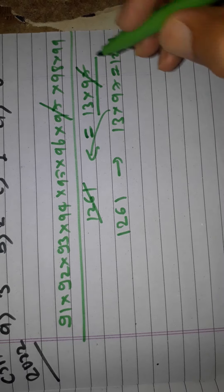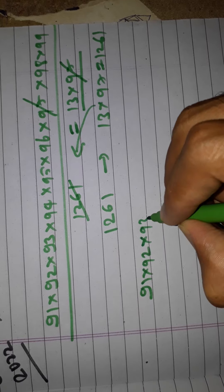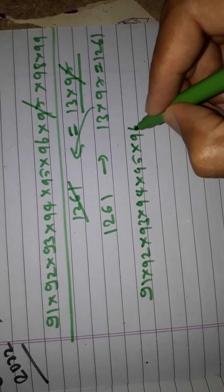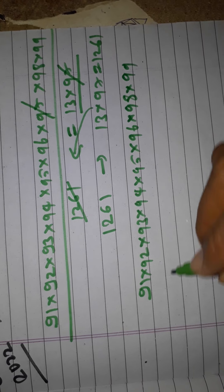After canceling 97, we have remaining: 91, 92, 93, 94, 95, 96, 98, and 99.